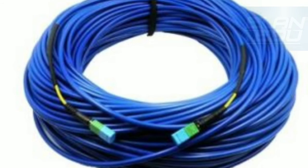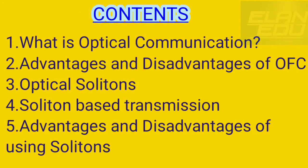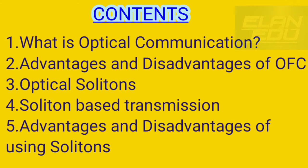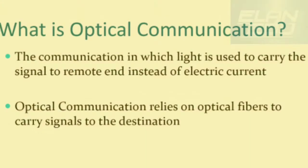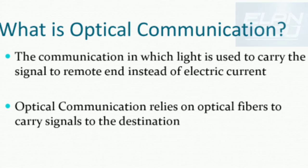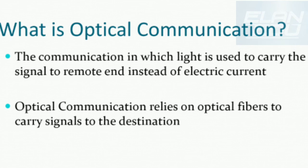Having seen what solitons are and the properties of optical fiber, we will now discuss optical communication — its advantages and disadvantages — as well as optical solitons and soliton-based transmission. Optical communication is communication in which light is used to carry the signal to a remote destination, instead of electric current. Optical communication relies on optical fibers to carry signals over longer distances to the destination.